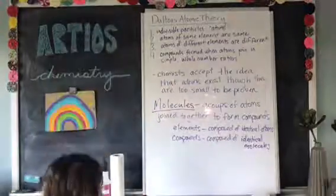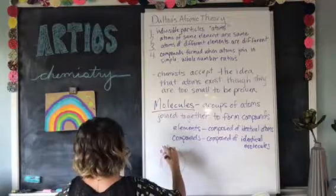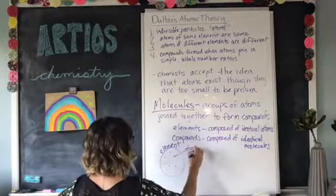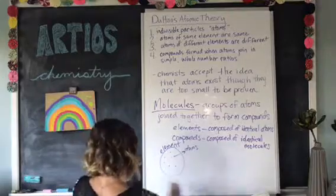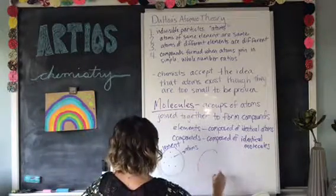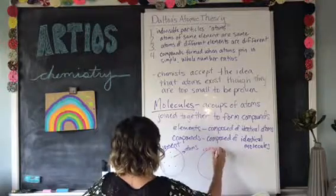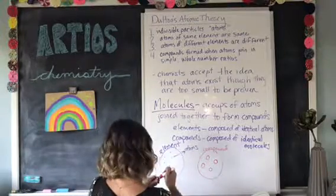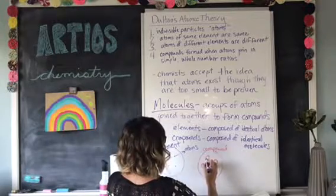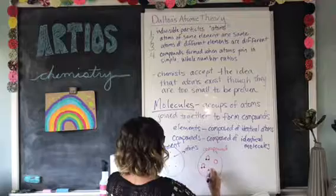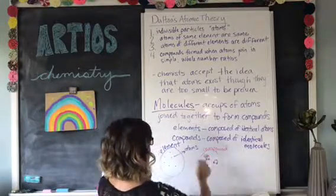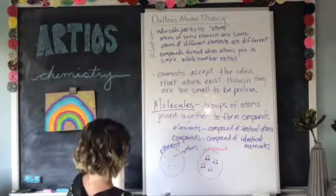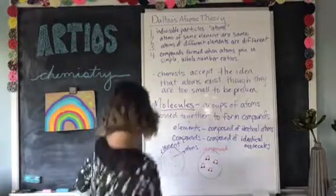I'm going to draw a picture for you to add to your notes. Here's an element comprised of individual atoms. Compare that to a compound comprised of molecules — all the molecules look the same; they have one large red circle and two little purple ones. So compounds are comprised of identical molecules, and molecules are atoms joined together in groups.